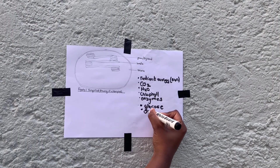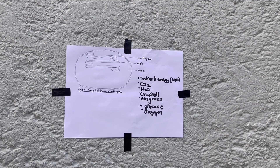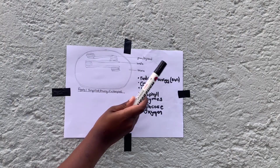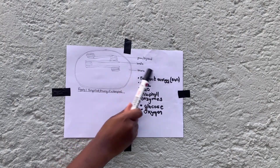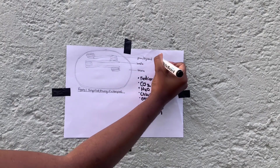Photosynthesis has two phases: the light phase and the dark phase. The light phase happens in the grana or the thylakoid — that is where the light phase happens.